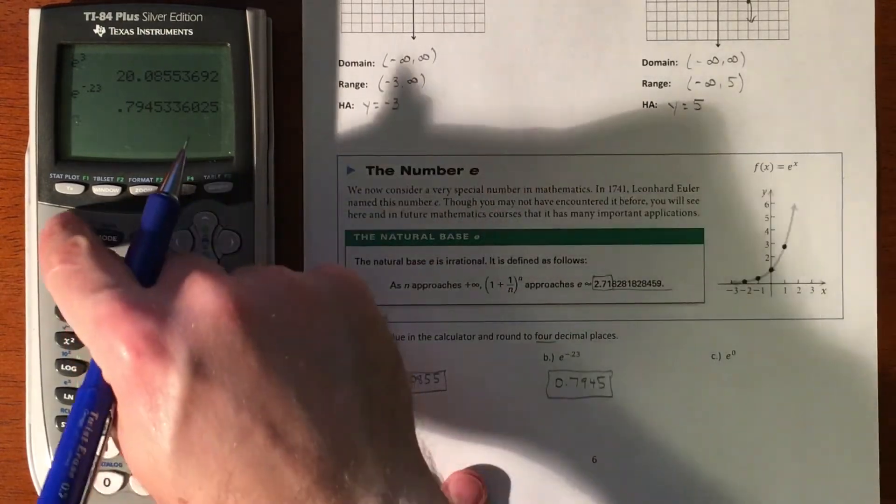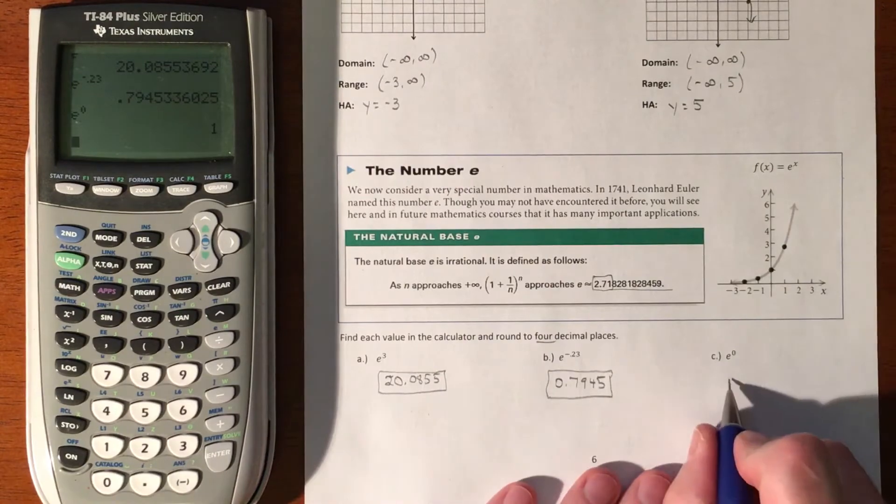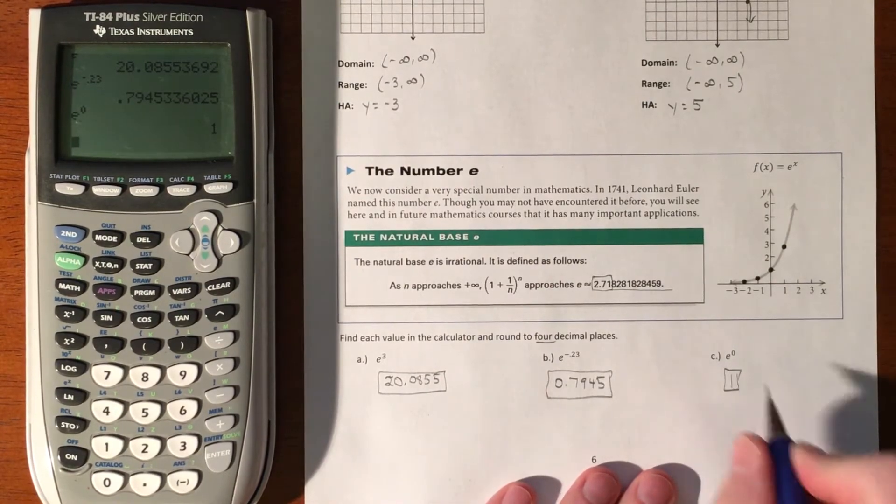And here, E to the 0. Now, E to the 0 is going to work exactly like anything to the 0. Anything to the 0 is 1.